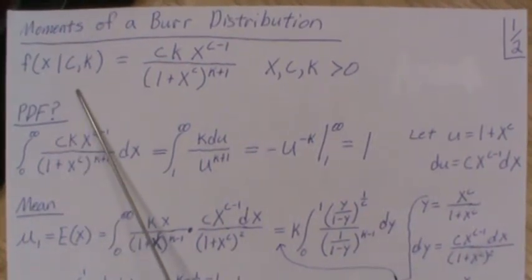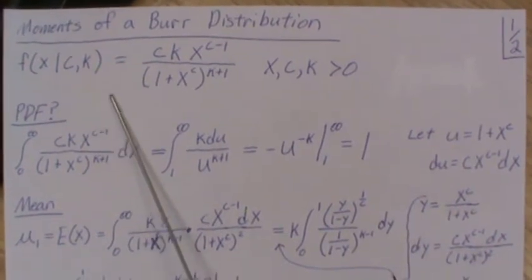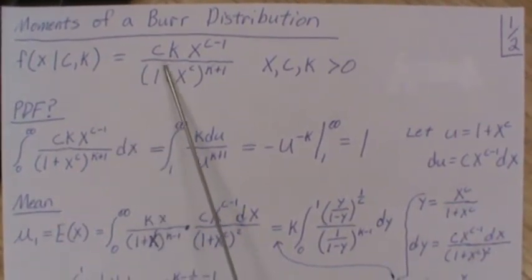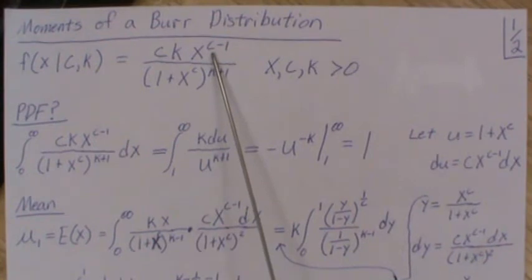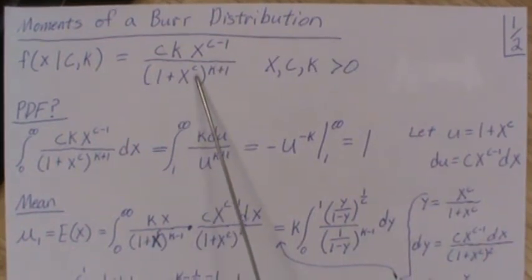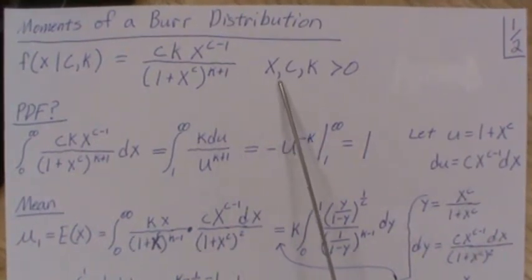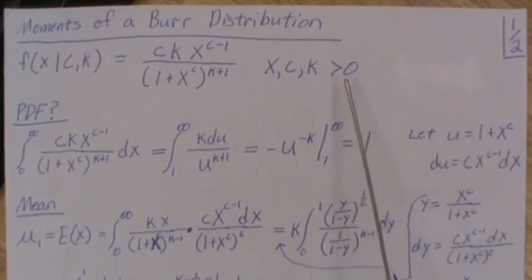The PDF, the density for a Burr distribution is this. There's two unknown parameters C and K. It's C, K, X to the C minus 1 divided by 1 plus X to the C raised to the K plus 1. Variable and parameters all have to be positive.